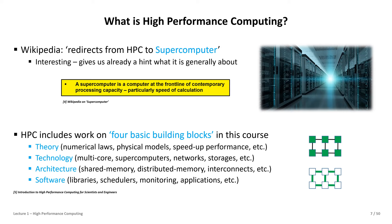Supercomputers are very important — they drive the design of HPC for the future — but HPC can also be deployed on smaller clusters that are not necessarily cutting-edge supercomputers. Looking from a broader perspective, a good book defines HPC on four levels: known physical models tackled with numerical methods, technology including multi-core and many-core chips with networks and interconnects, HPC machine architectures covering shared and distributed memory, and the software ecosystem including libraries, modules, schedulers, and application software bundles.